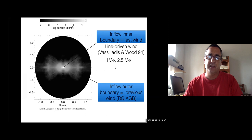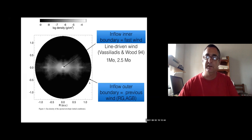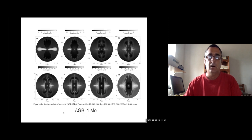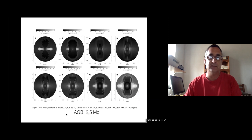We put a line-driven wind that is parameterized like Vassiliadis and Wood, and outside the outer boundary we put the previous wind — the red giant or AGB wind. Independent of what kind of model you put for the red giant, whether it's Paul Ricker's original model or one mass versus 2.5 solar masses for the AGB, you always get a planetary nebula which is basically bipolar.